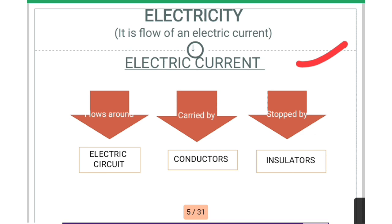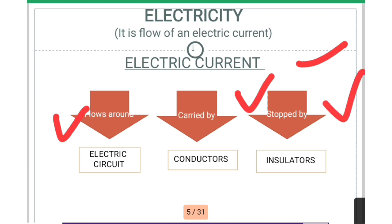This is further subdivided: electric current flows around an electric circuit, and it is carried by conductors. We will study further about conductors and also about insulators, which stop the current.